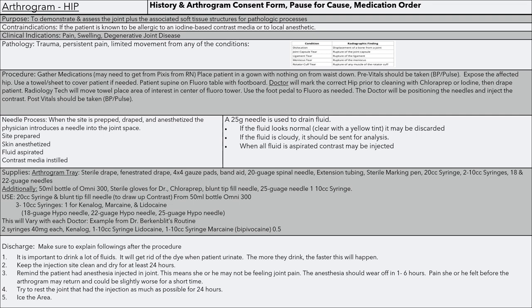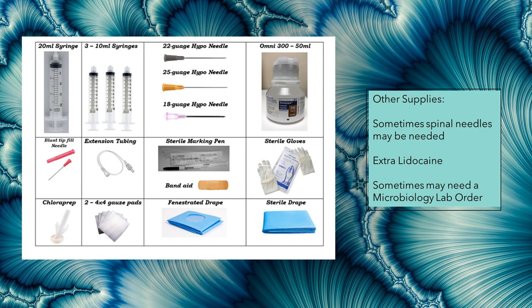Discharge instructions: make sure you explain to your patient that it is important to drink lots of fluids — it will help get rid of the dye when you urinate. Keep the injection site clean and dry for at least 24 hours. Remind the patient they have had anesthesia, meaning they may not be feeling joint pain currently; however, it should wear off in one to six hours. The pain they felt before, plus some agitation from today's events, might make it slightly worse for a short time. Try to rest the injected joint as much as possible for 24 hours, and you may ice the area. Other supplies include the spinal needle, extra lidocaine, and your microbiology lab order if needed.